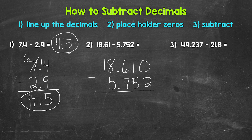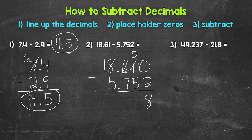Now that we've lined up the decimals and used a placeholder zero, we can subtract. Starting with the thousandths place: we have 0 minus 2, which we need to borrow. So we borrow from the 1 — this is now 0 — and now we have 10 minus 2, which gives us 8. Now we have 0 minus 5, so we need to borrow again, and we end up with 10 minus 5, giving us 5. Then we have 5 minus 7 — we need to borrow again — and now we have 15 minus 7, which gives us 8.